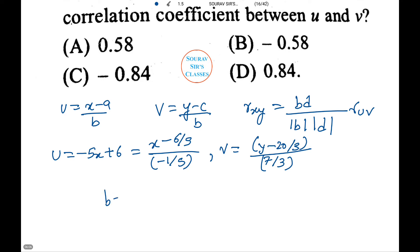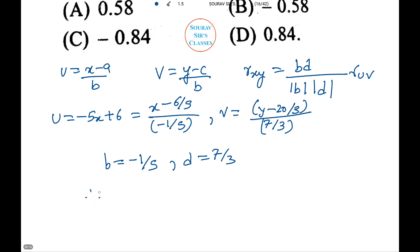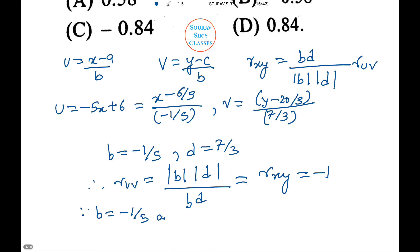U equals minus 5X plus 6 equals X minus 6 by 5 by minus 1 by 5. Thus V equals Y minus 20 by 3 by 7 by 3. Here B equals minus 1 by 5 and D equals 7 by 3. Therefore rUV equals mod B into mod D by BD which equals rXY. Since B equals minus 1 by 5 and D equals 7 by 3 are of opposite signs, therefore rUV equals minus rXY which equals minus 0.58.